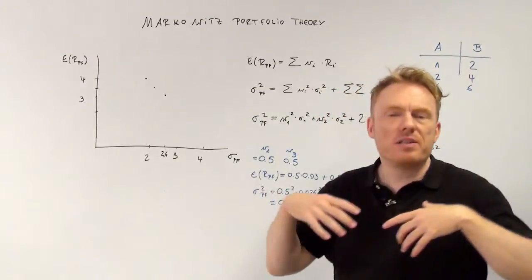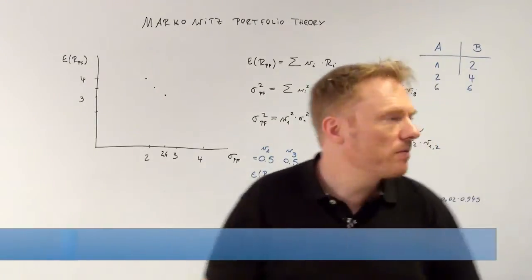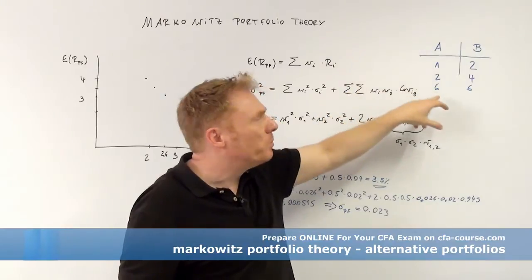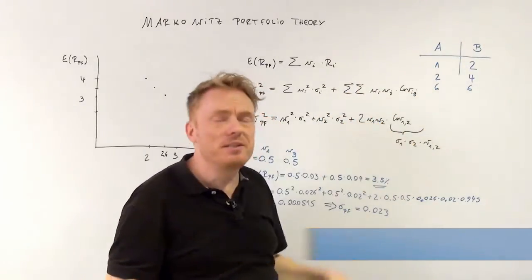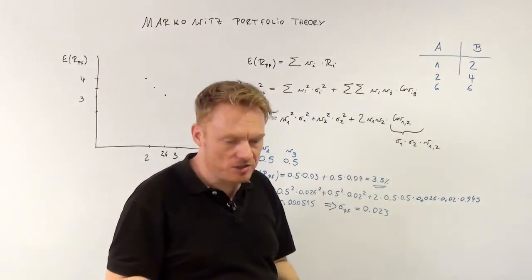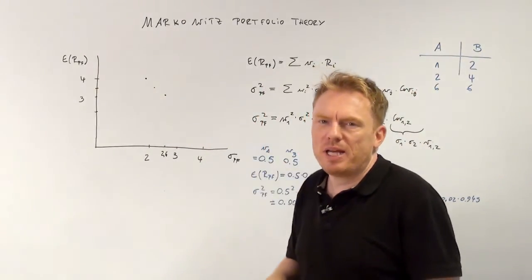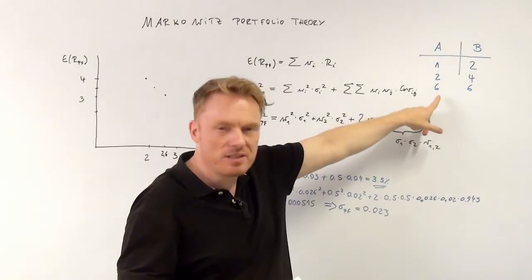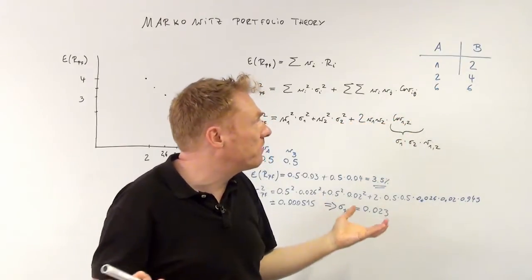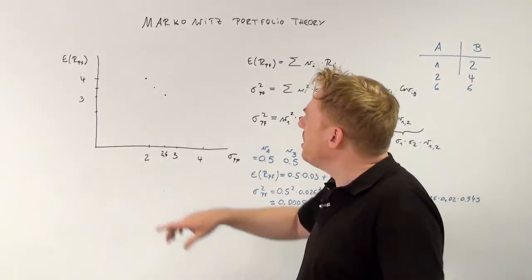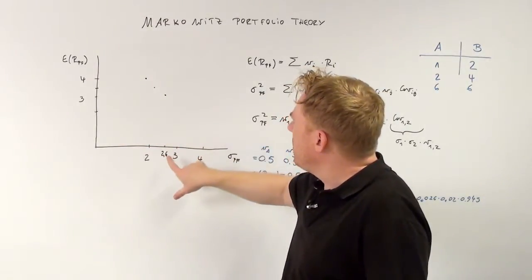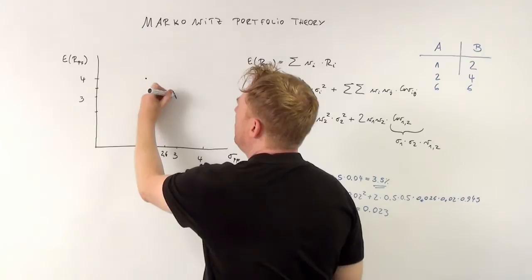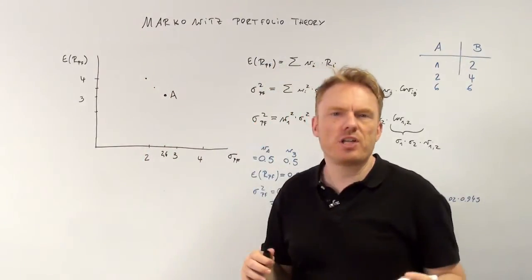Then we take a look at different portfolios. Say we have two shares, share A and share B, with different returns in different situations. We already calculated in previous videos the expected returns and standard deviations. Share A has an expected return of (1 + 2 + 6) / 3 = 3%, and a standard deviation of 2.6%.